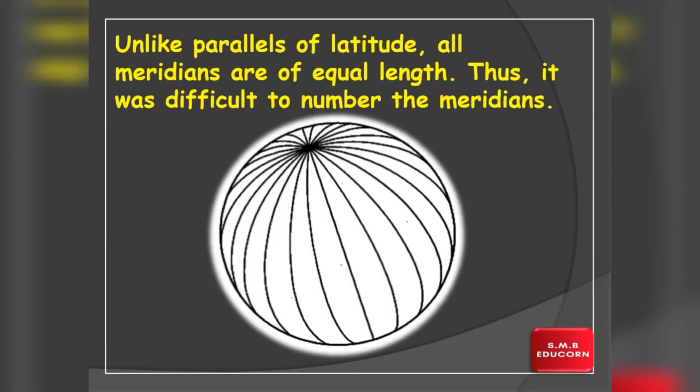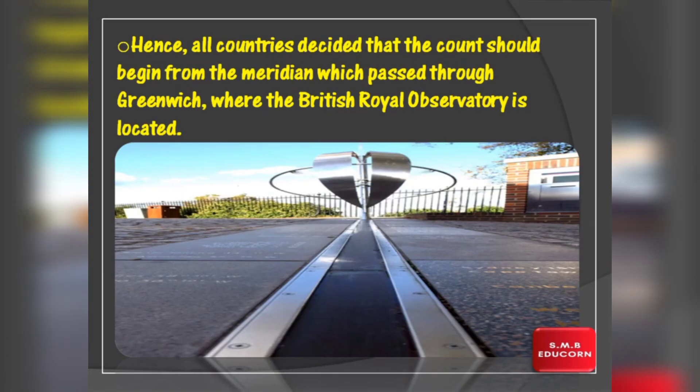Jaise ki hamne latitudes ke context me dekha tha ki equator sare latitudes me sabse bada hone ke karan equator ko sabse main latitude maana gaya tha, aur usse hamne zero degree number se bhi denote kiya tha. Par longitudes ke context me, jaise ki hamne dekha tha ki jitne bhi meridians of longitudes hai, sabki length same hoti hai, sab semi circle hoti hai. So, that's why it was difficult to number the meridians, jab koi main meridian of longitude tha hi nahi toh. Ab sare countries ke saamne ye ek problem tha ki ab hum meridians of longitude ke context me counting kahan se shuru kare.